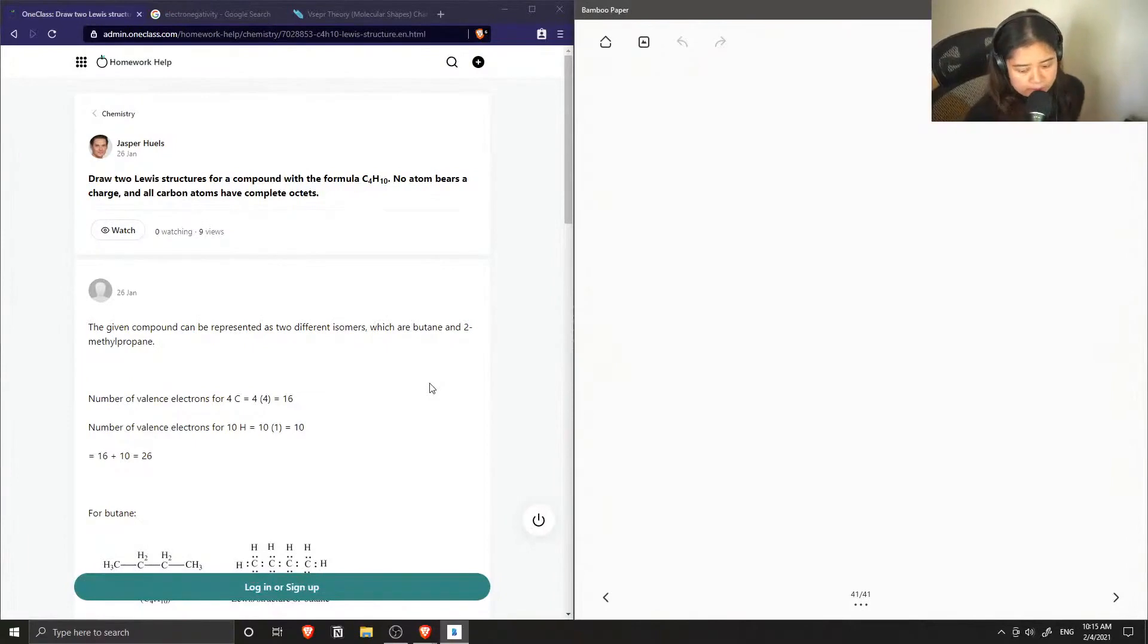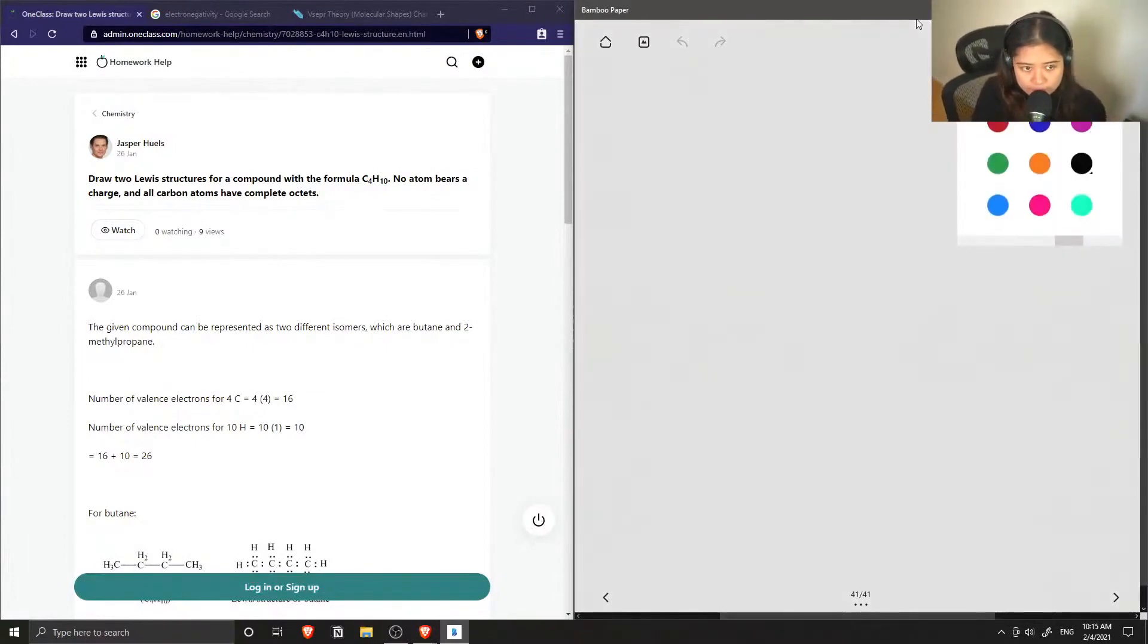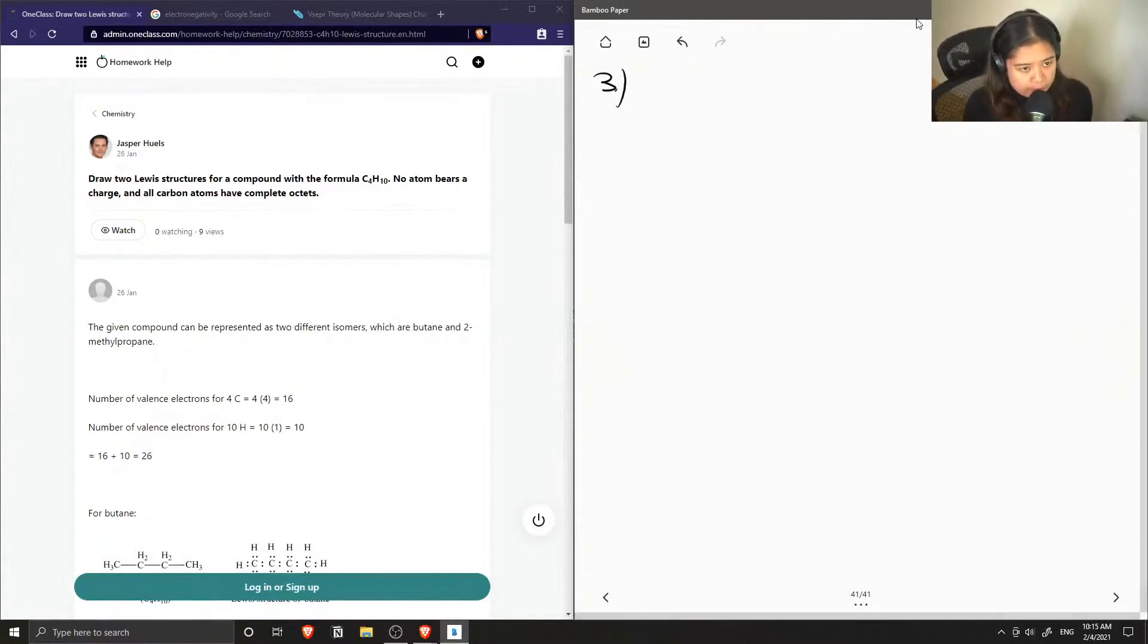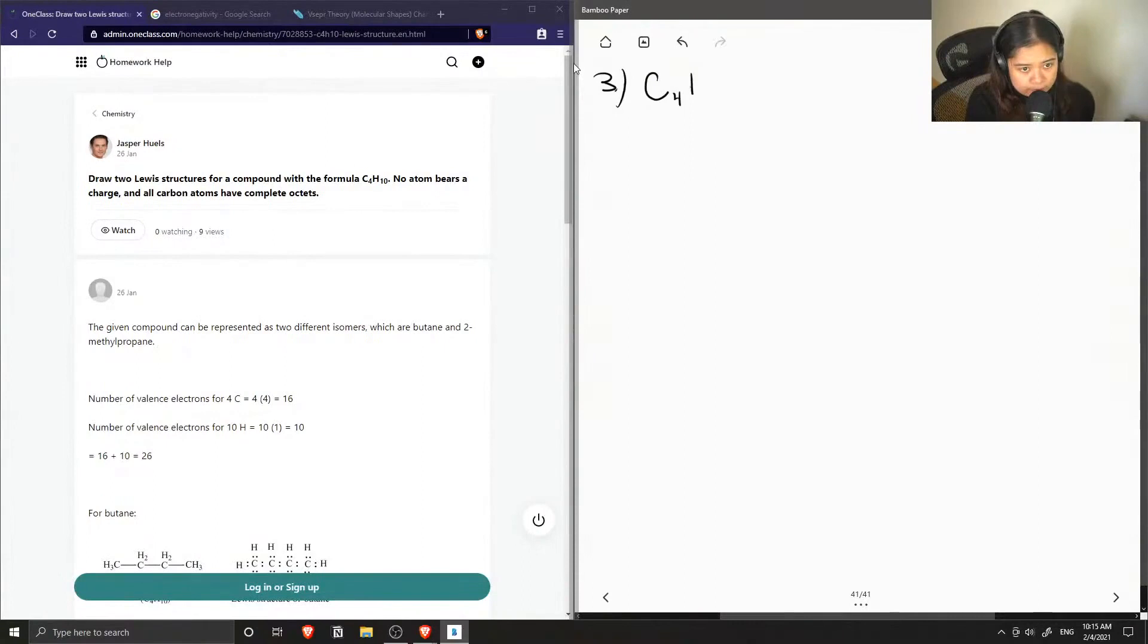Okay, so now we're on to question number three. Draw two Lewis structures for a compound with the formula C4H10. No atom bears a charge and all carbon atoms have complete octets. So let's try to draw two different structures for C4H10.